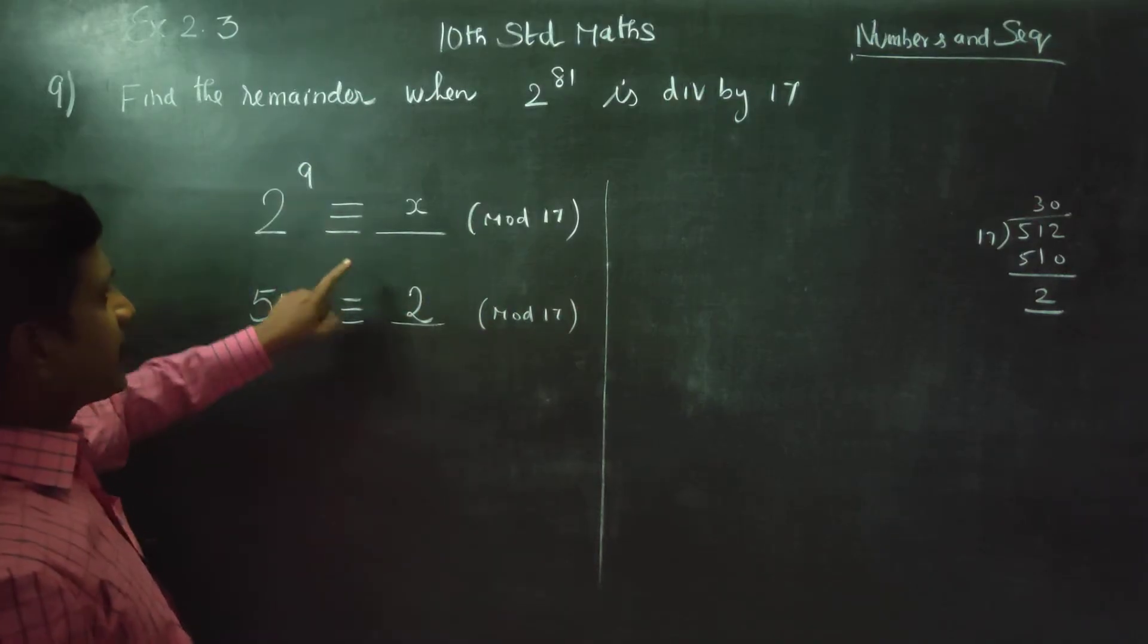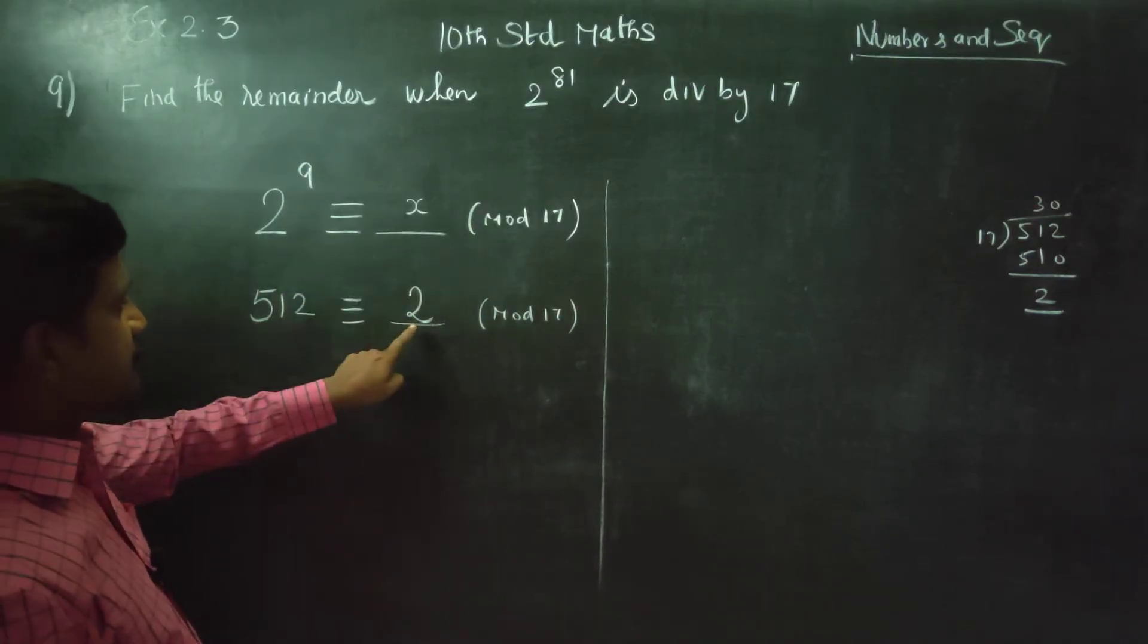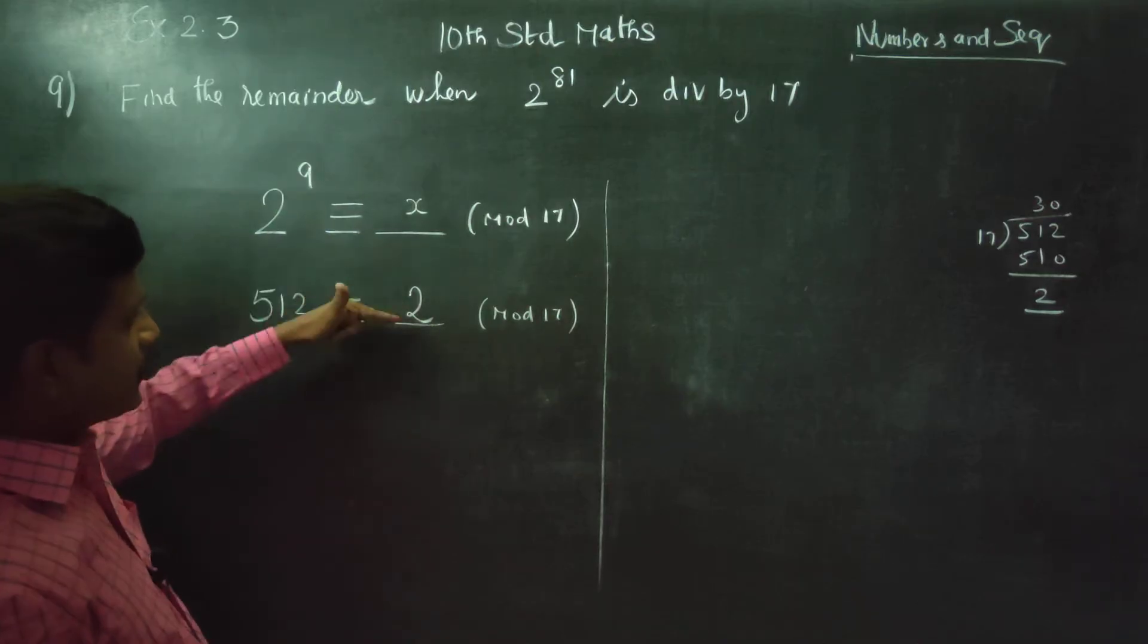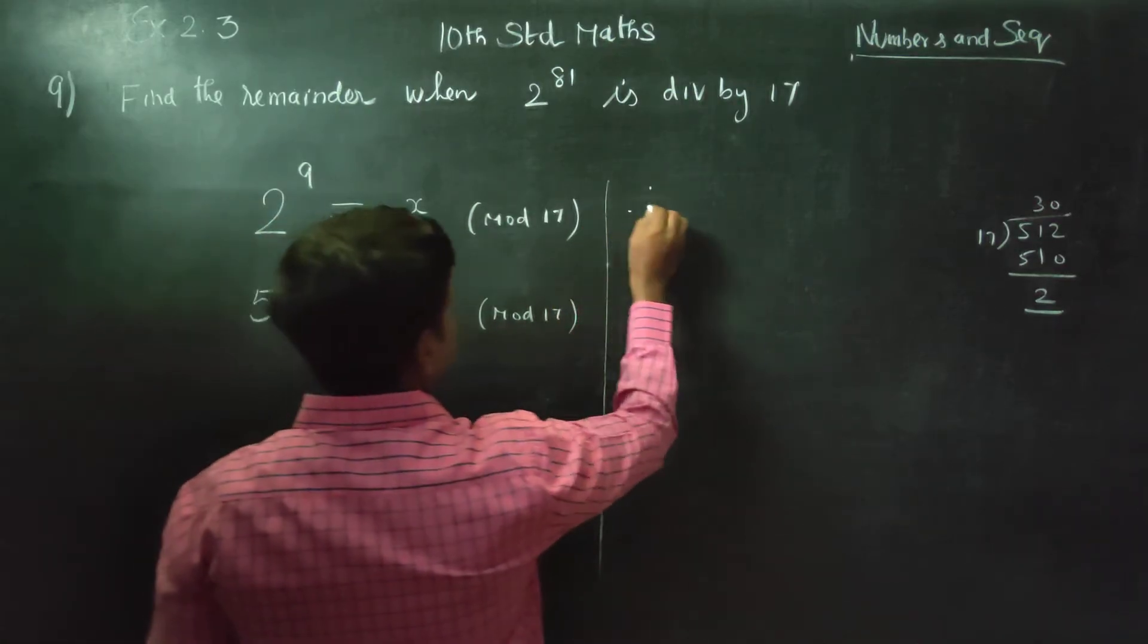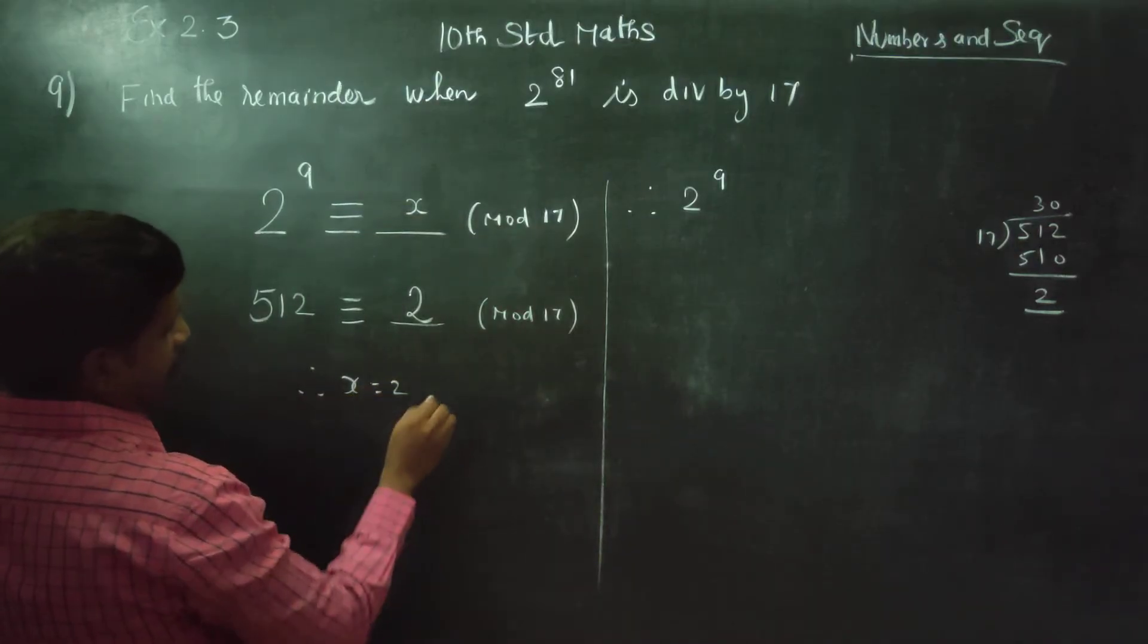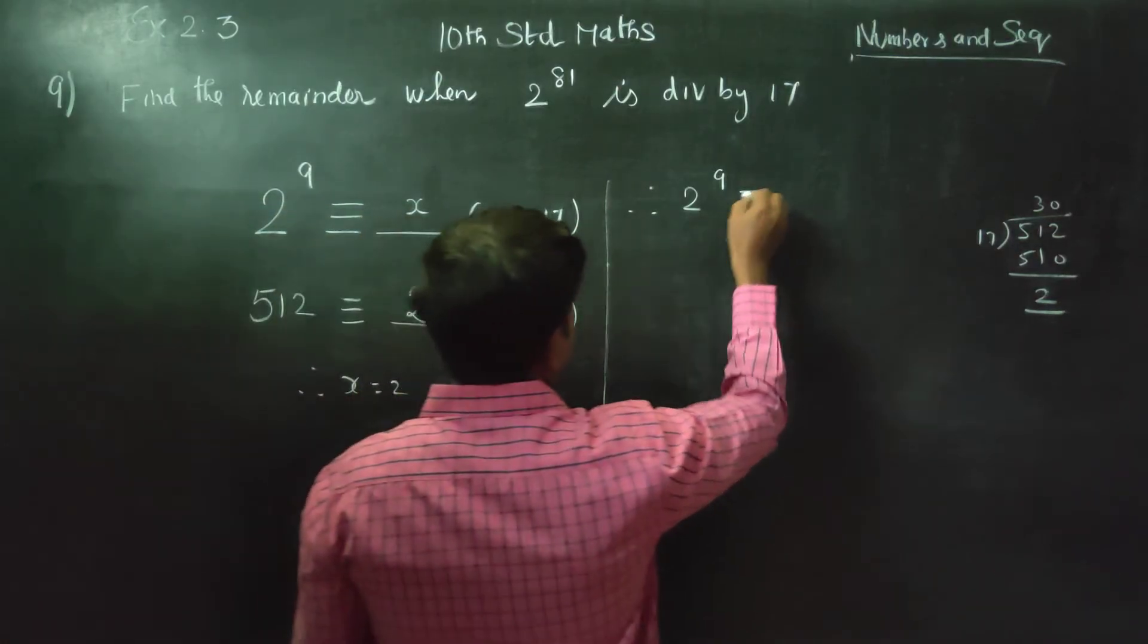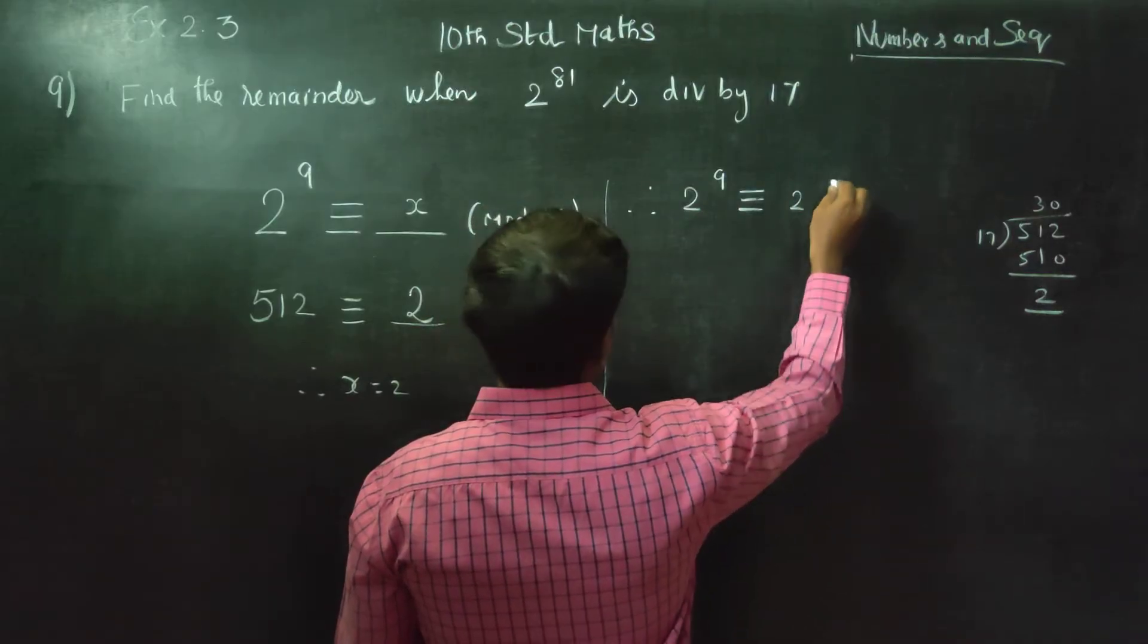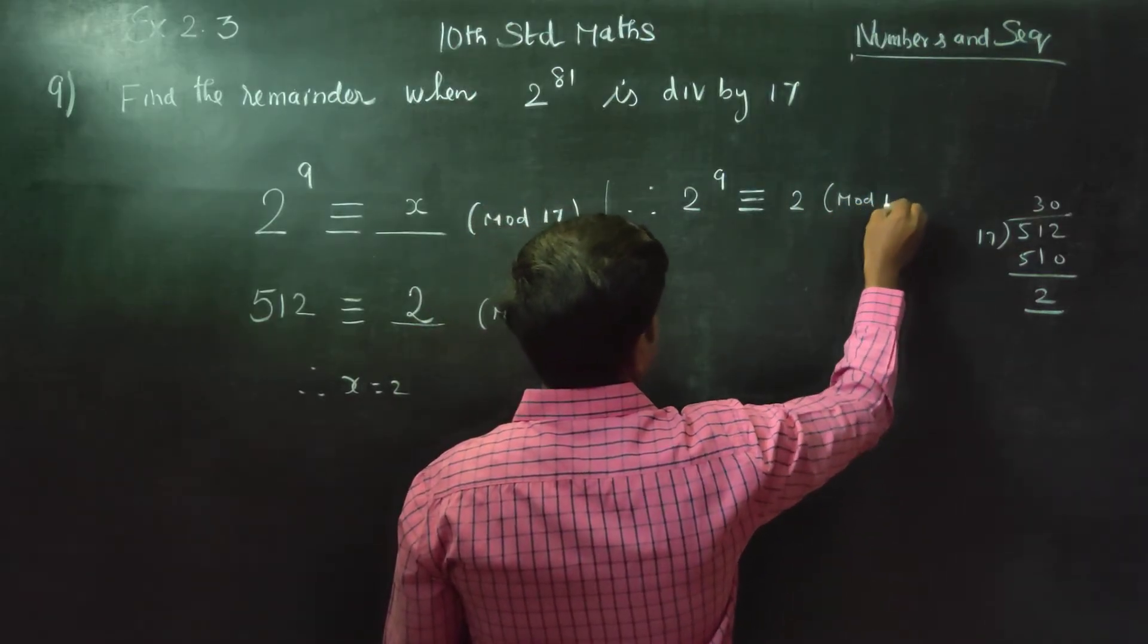2 power 9 is congruent to 2. Therefore, for the current one, 2 power 9, x is equal to 2. Therefore, 2 power 9 is equal to 2 mod 17, right?